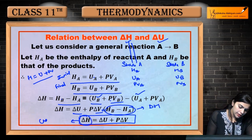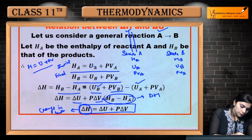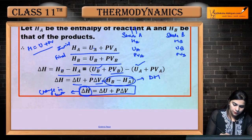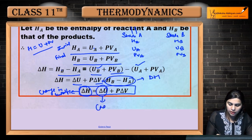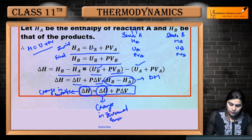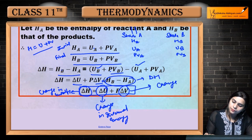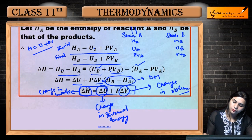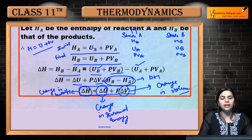So our final derived relation is: ΔH = ΔU + PΔV. Here ΔH is your change in enthalpy, ΔU is your change in internal energy, and PΔV is the pressure-volume work term. This is the relation between delta H and delta U derived from the two-state approach.